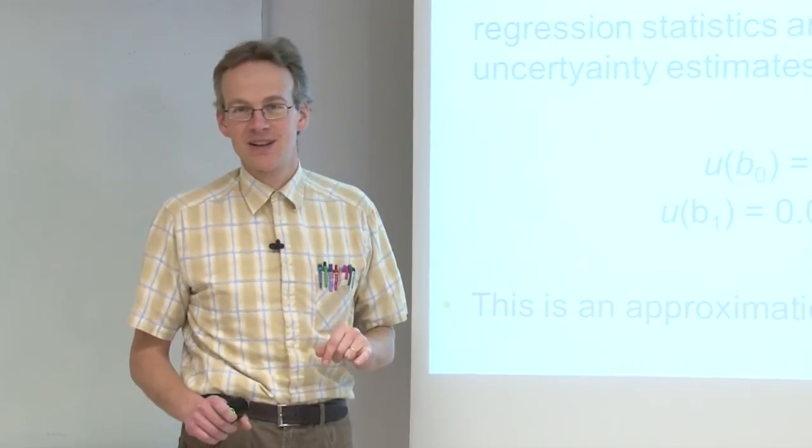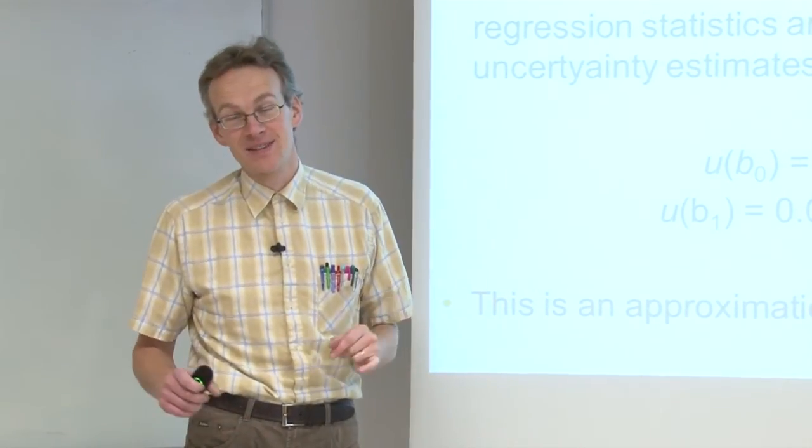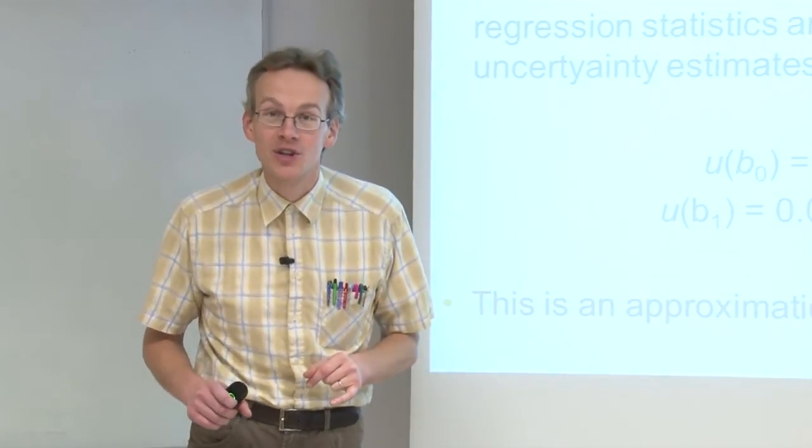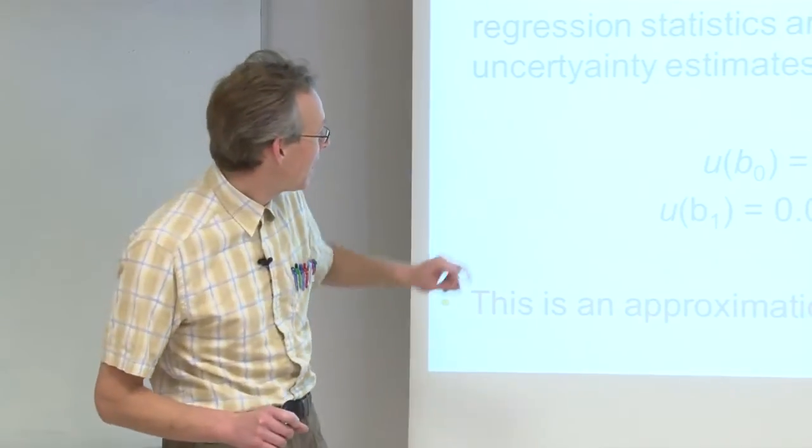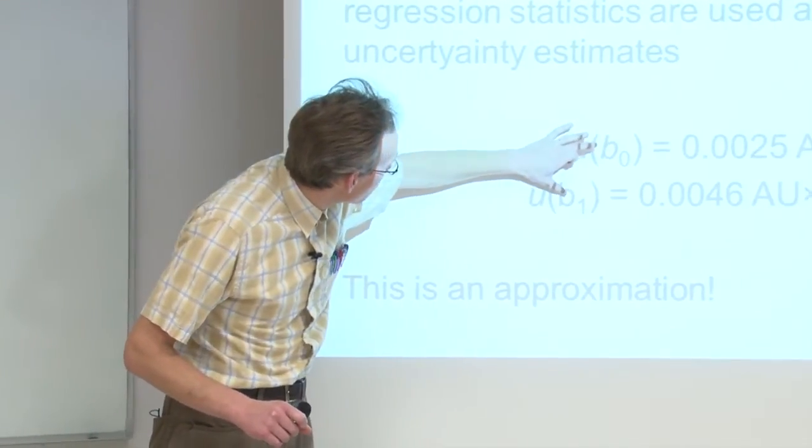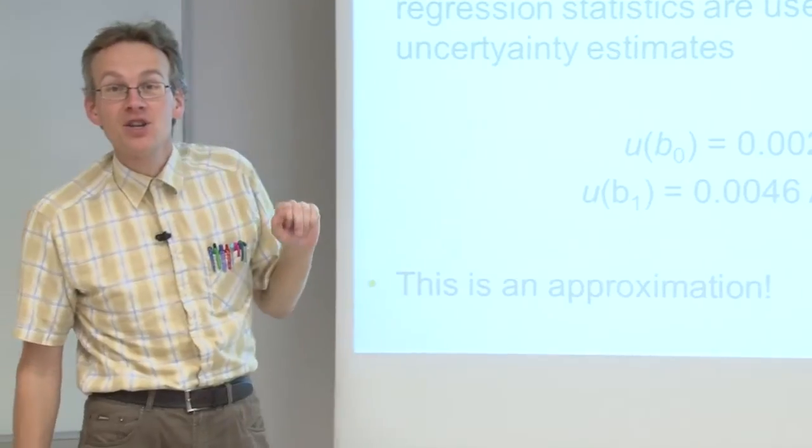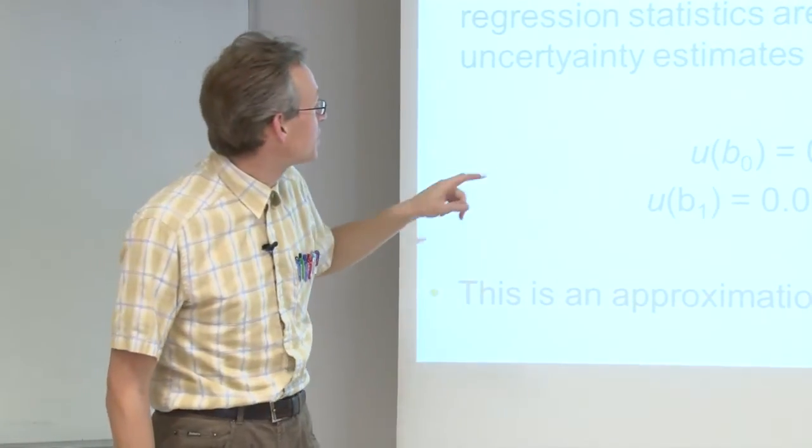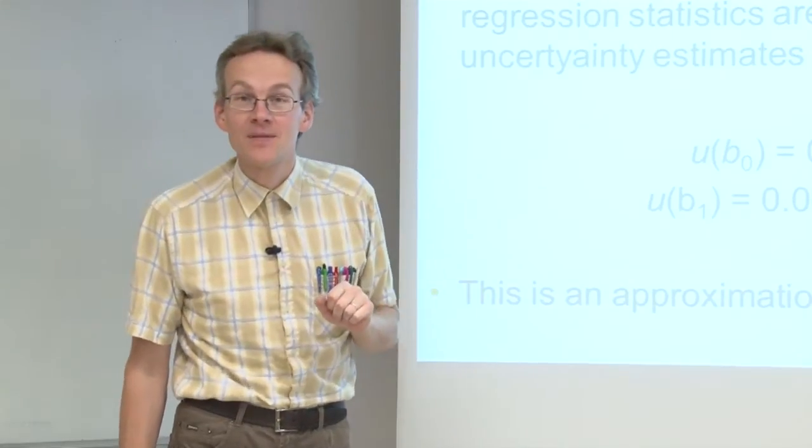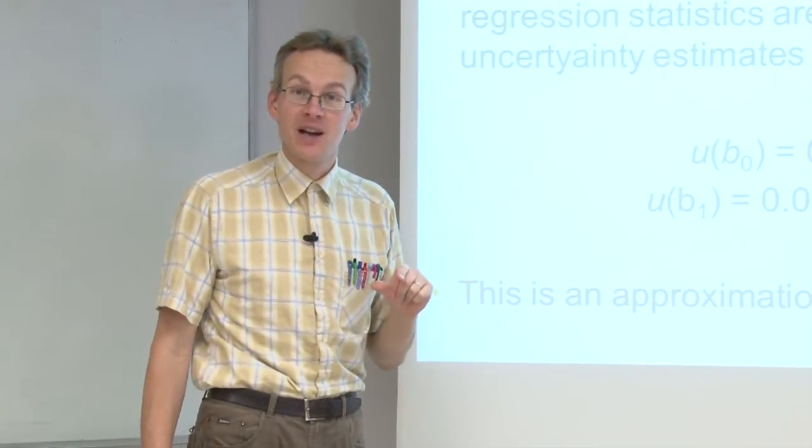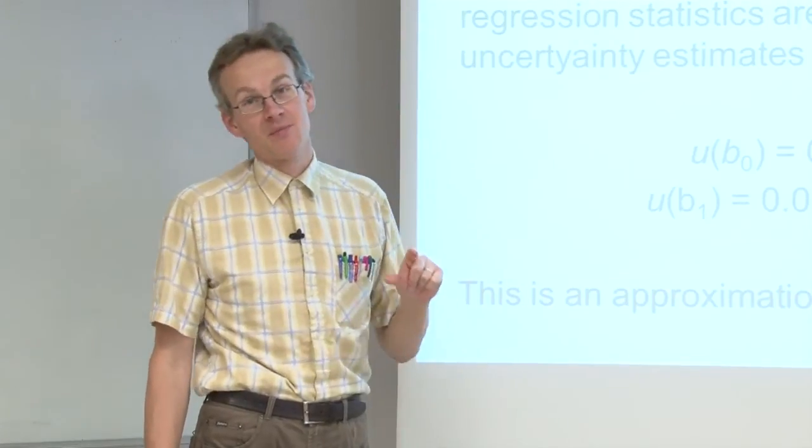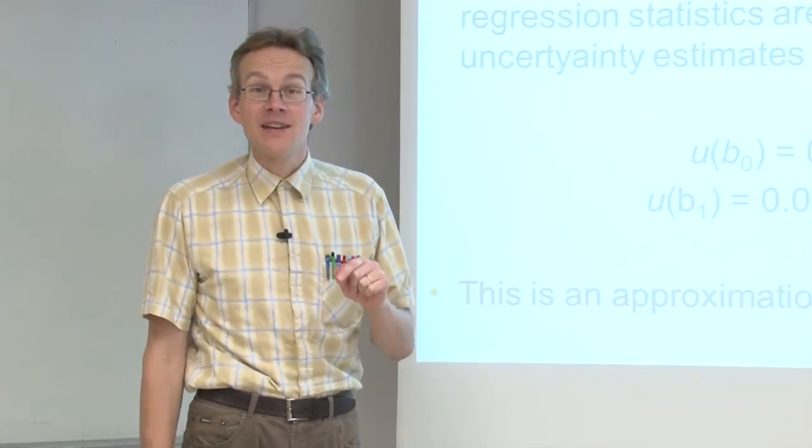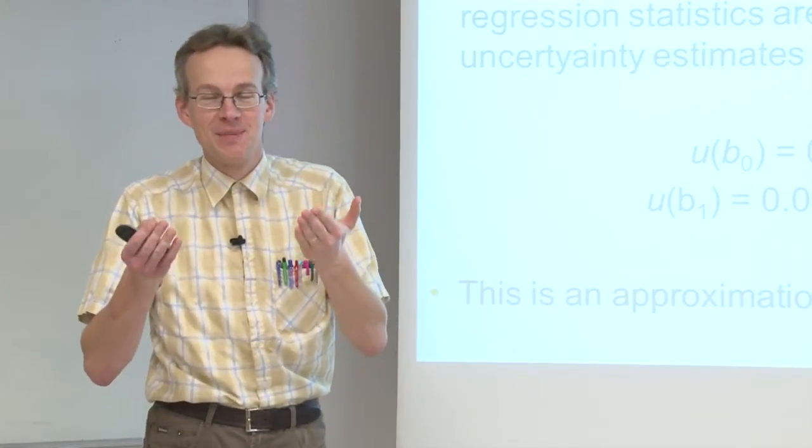Slope and intercept of the same calibration line are always slightly correlated. But this correlation is a negative correlation, meaning if one of them becomes higher, the other one becomes lower. If a negative correlation is left out of consideration, then we slightly overestimate the uncertainty.